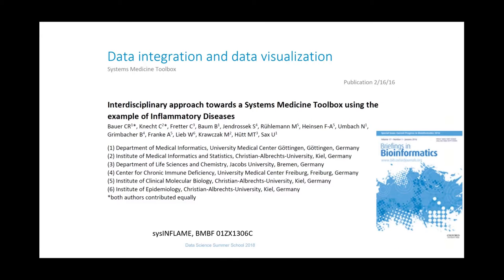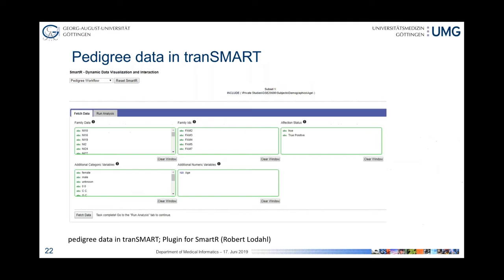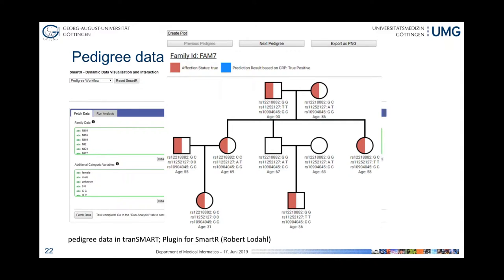We published some of these data integration and visualization aspects in the Bioinformatics journal — interesting because we're medical informaticists, but the journal liked it because we included the microbiome data type. Following up with epidemiologists and statisticians in Kiel, it turned out we were usually looking at single patients, but in some cases trios and family structures are interesting. So in another student project we set up a pedigree plugin to create pedigree plots with standard notations and SNP data. That's another advantage of the plugin concept.